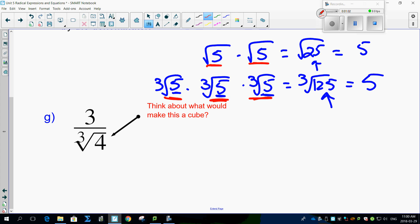So always think about what I've got here. Think about what would make this either a cube, a fourth, a fifth, a sixth, and so on. So if you think about this, look at what the cube of this number is. Think about it. 4 cubed is 64.